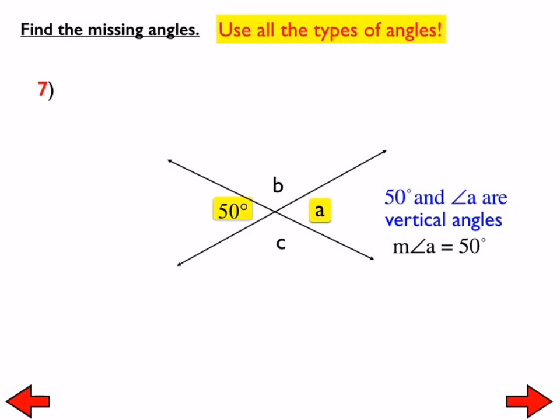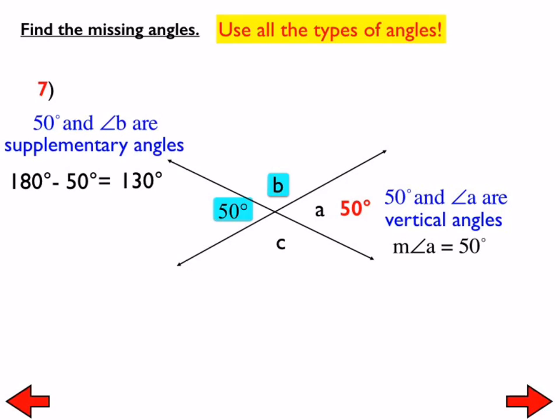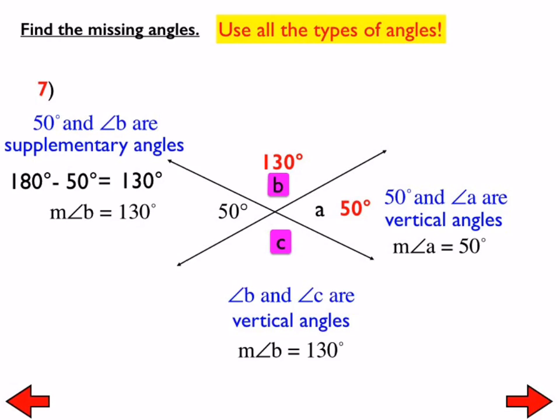Those are vertical angles. Therefore, the measure of angle A is 50. And then angle B and the 50 degree angle form a linear pair or are supplementary. So they have to add up to 180. So that makes the measure of angle B 130 degrees. And then because B and C are vertical, angle C would obviously also have to be 130 degrees. All right.